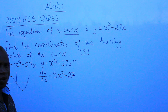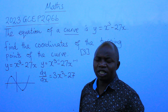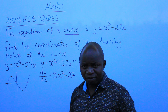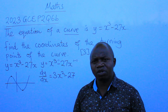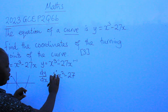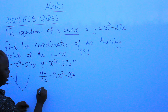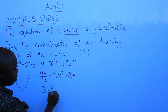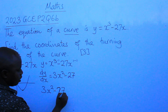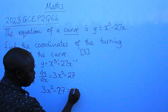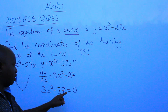You need to know that dy/dx at the turning point is always equal to 0. So you are going to equate this dy/dx that we have calculated — which is 3x² minus 27 — to 0, because dy/dx at the turning point equals 0.